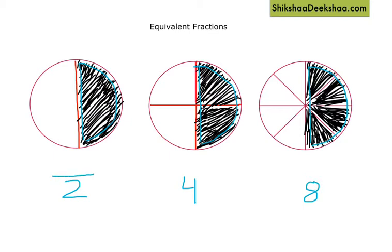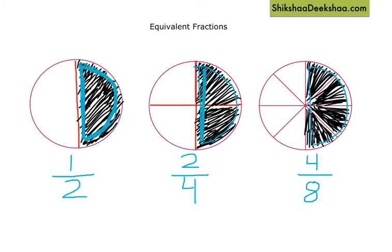Here I am giving you one part out of two, here I am giving you two parts out of four, and here I am giving you four parts out of eight. So the fraction for the shaded part is: one by two, two by four, and four by eight. But you can see that their value is the same — they are exactly half of each cookie.